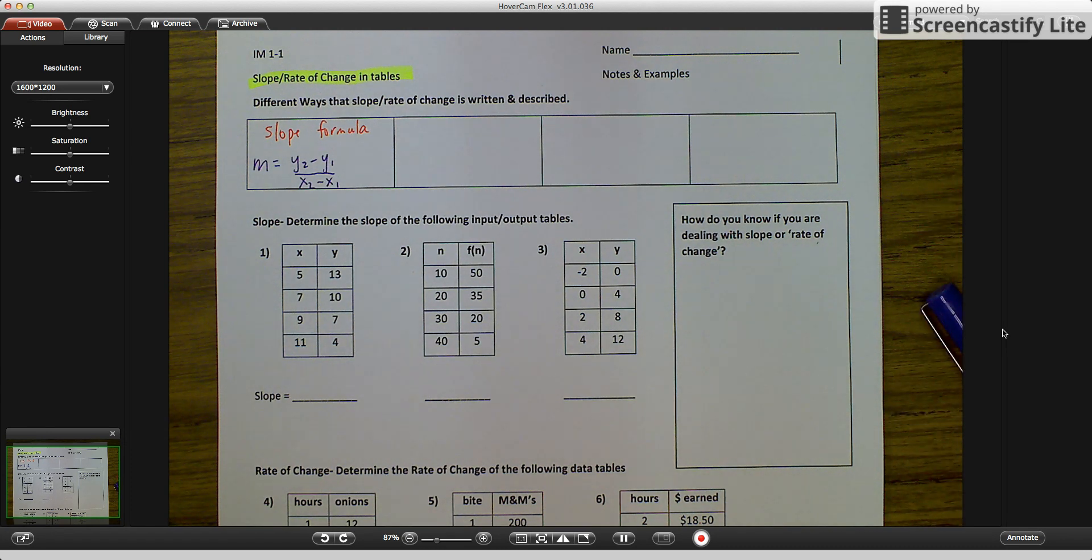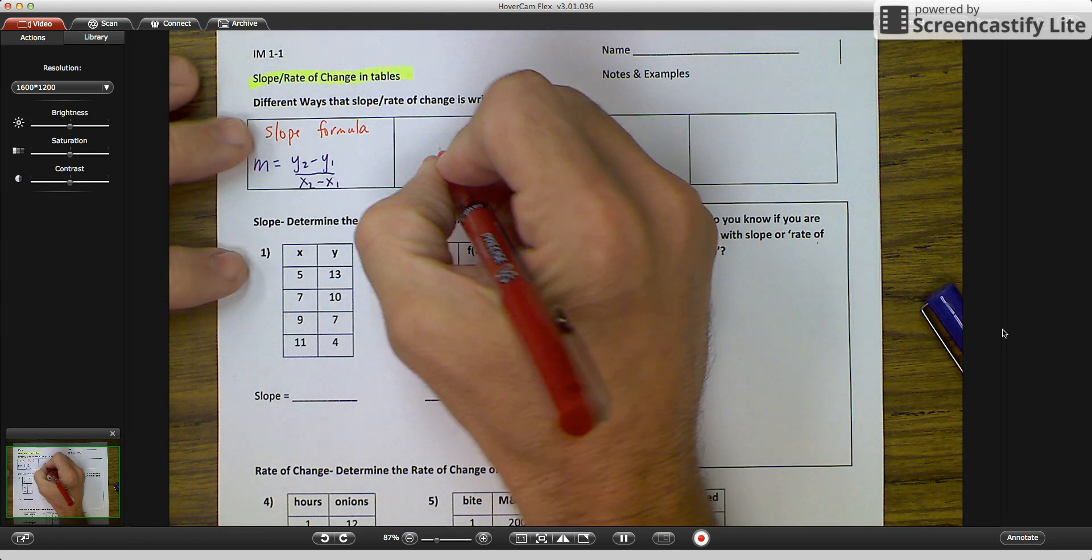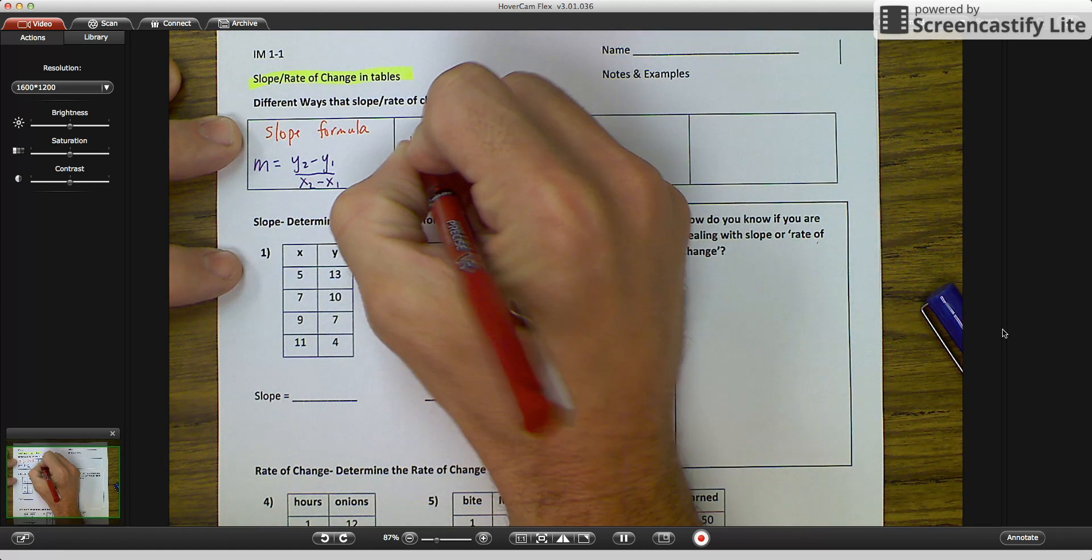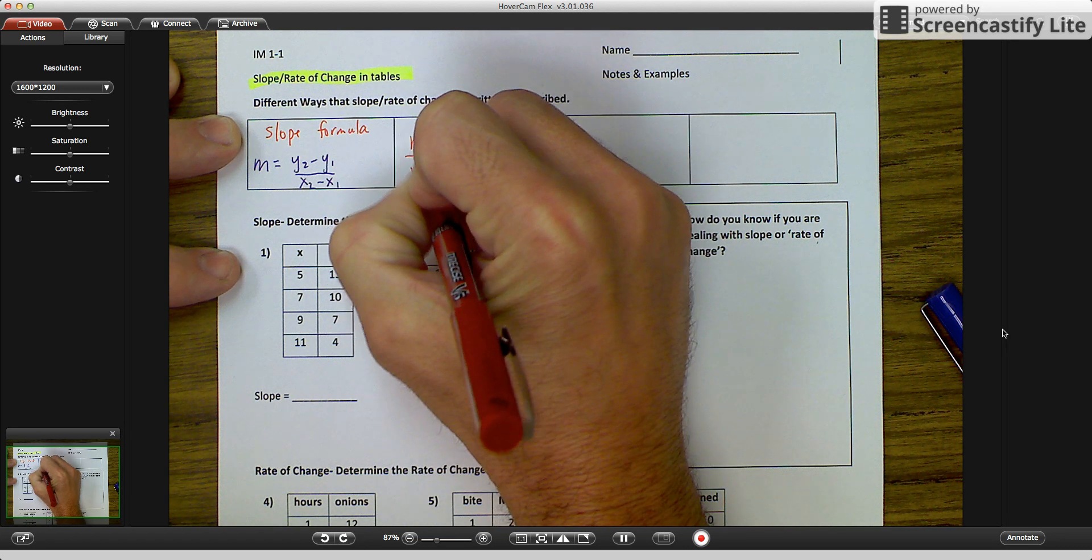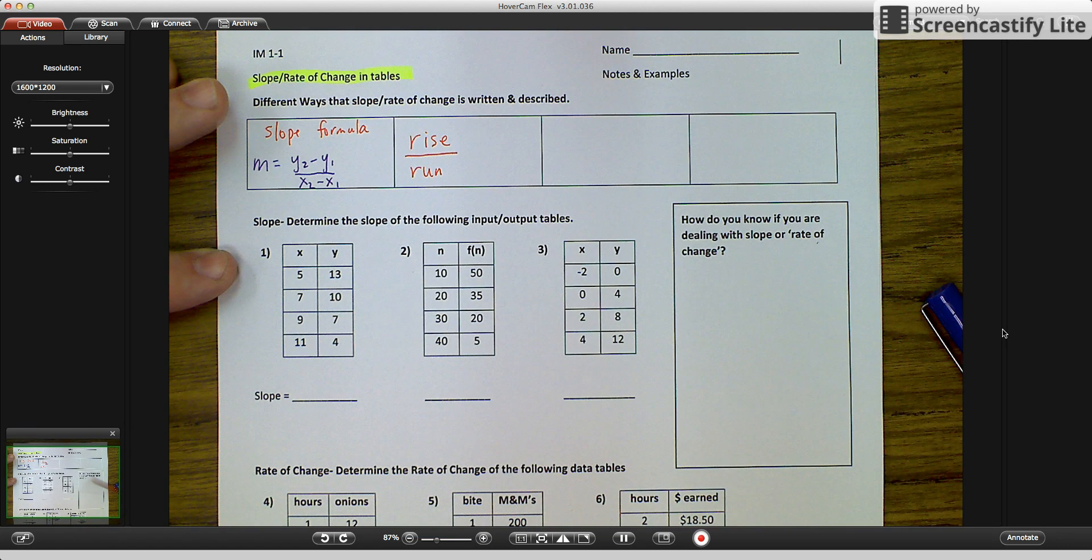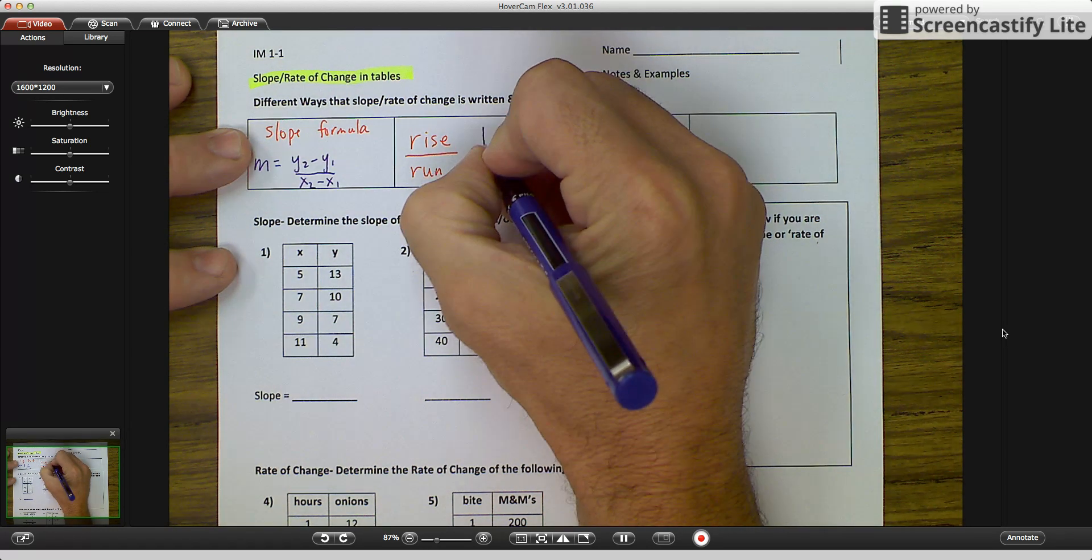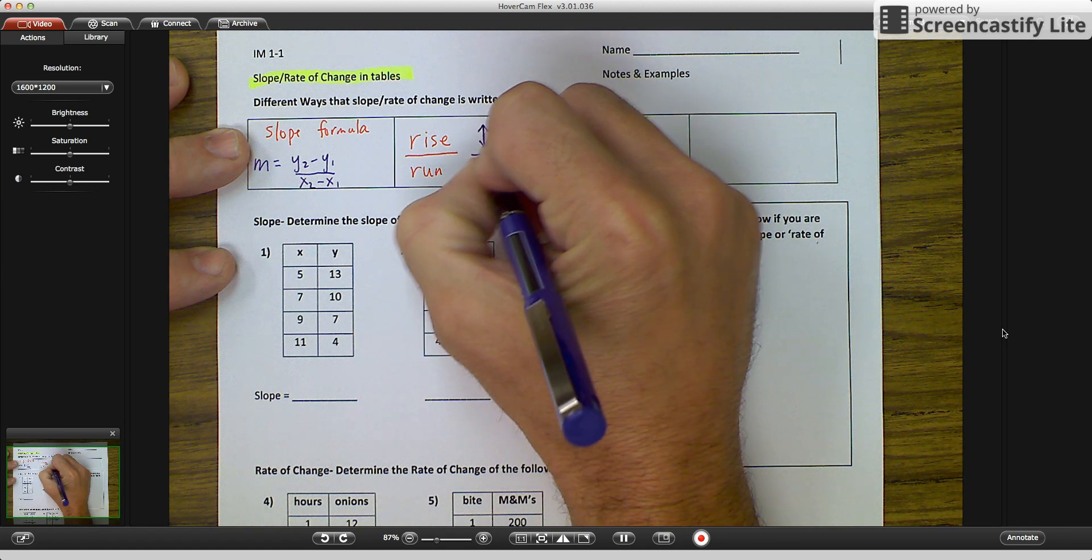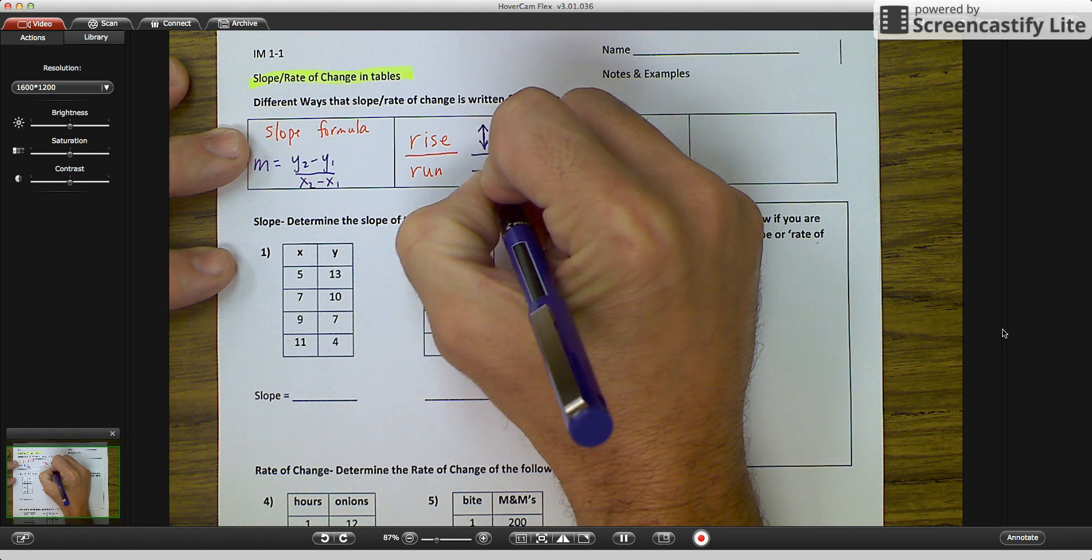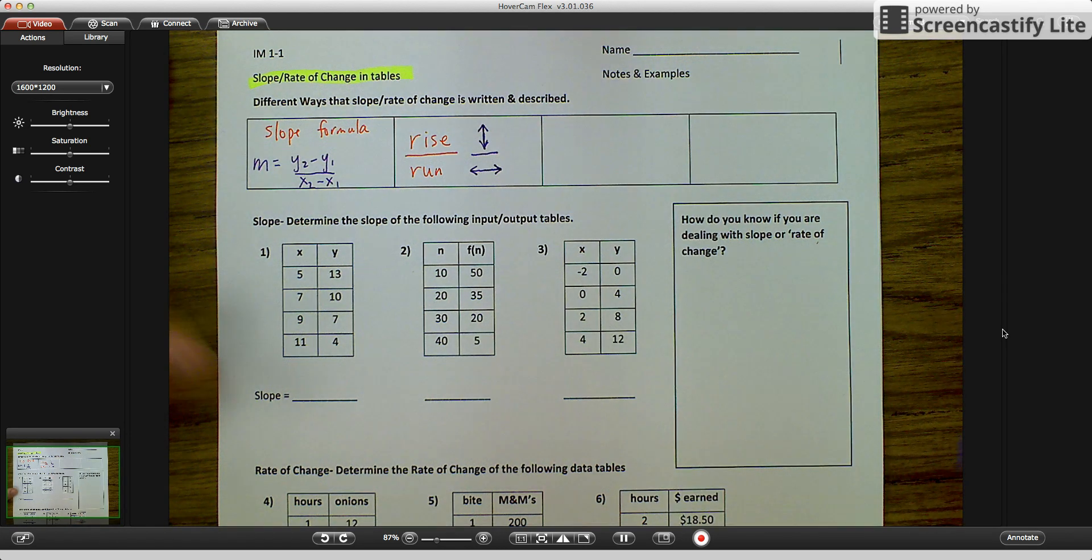Another way that might be a little bit easier to remember, and I believe everybody's heard these words, is they both start with r: rise over run. And the rise over run really just talks about the rise like you're standing up and down, so your change in your y values over your run. When you run, you run horizontally, so your change in your x's.